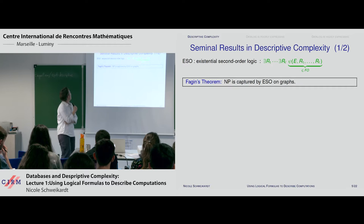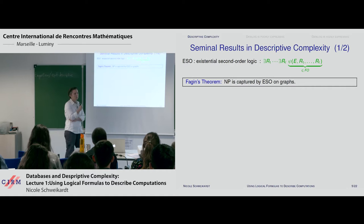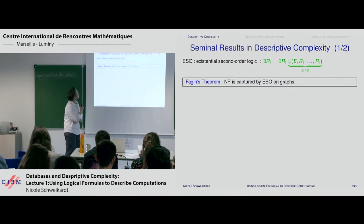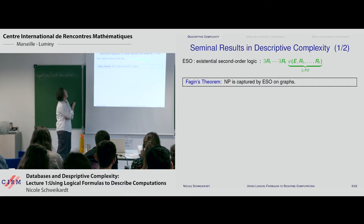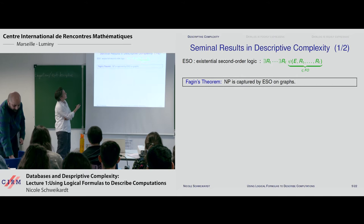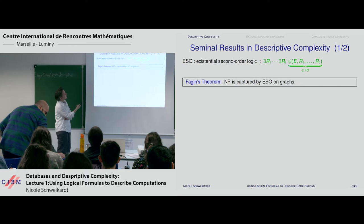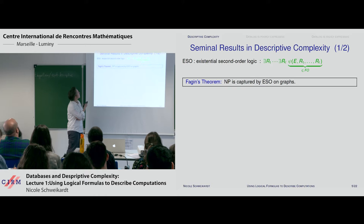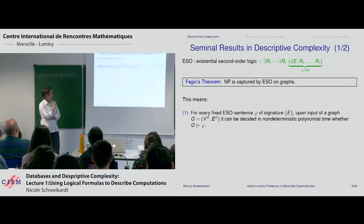I want to mention the two seminal results in descriptive complexity that everybody has to know. Fagin's theorem is something that everybody should mention when speaking about descriptive complexity. It's about existential second-order logic — formulas with an existential block of quantifiers over relations of arbitrary arity, followed by a first-order formula that uses the edge relation and the existentially quantified relations. Fagin's theorem tells you that NP — non-deterministic polynomial time — is captured by existential second-order logic on graphs.